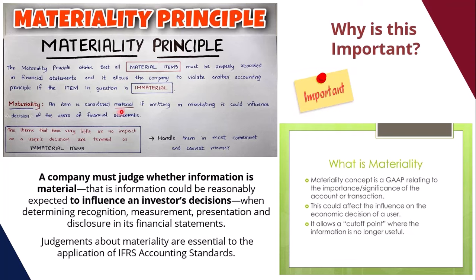When is something material? It's considered material if leaving it out or misstating it could influence the decision of the users of the financials. If something has very little or no impact, then it's immaterial. A company must judge whether information is material — whether it could reasonably be expected to influence an investor's decision regarding recognition, measurement, presentation, and disclosure. Judgments about materiality are essential to the application of IFRS accounting standards.